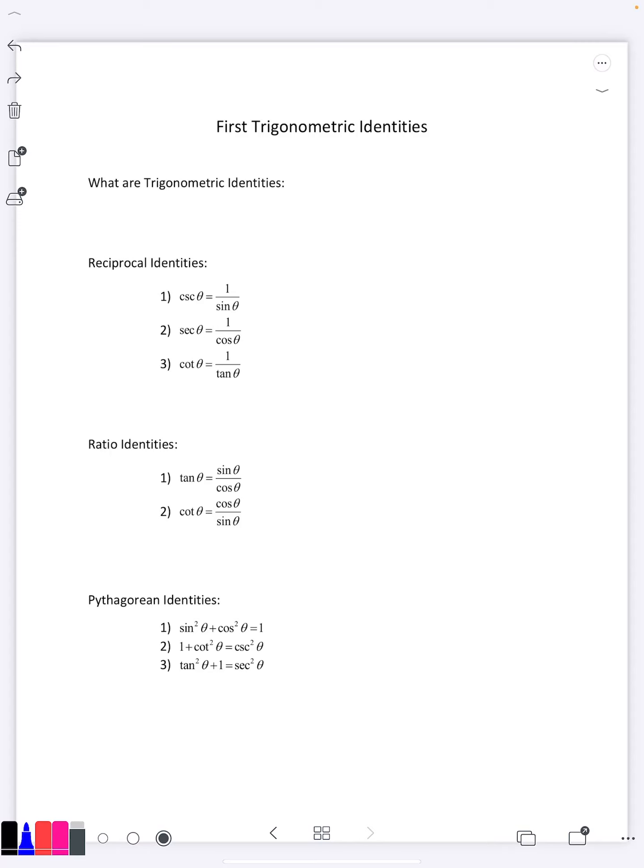In our previous video, we learned what the six trigonometric functions were: sine, cosine, tangent, secant, cosecant, and cotangent. And in this video, we're going to learn what trigonometric identities are.